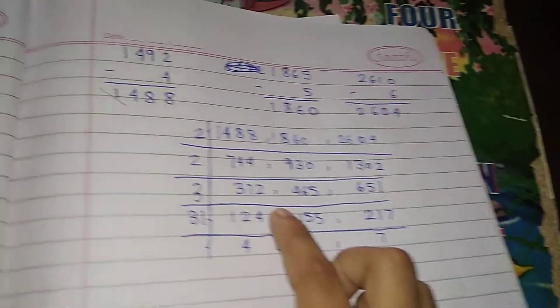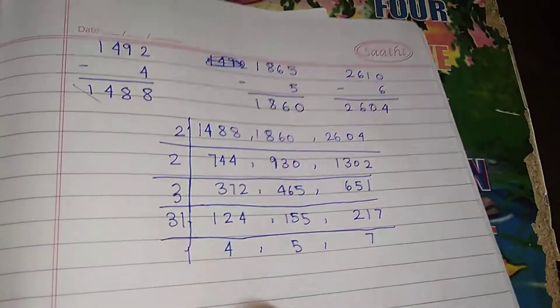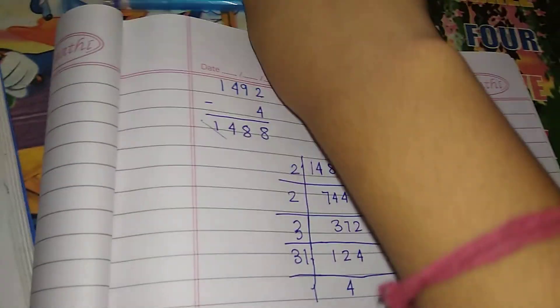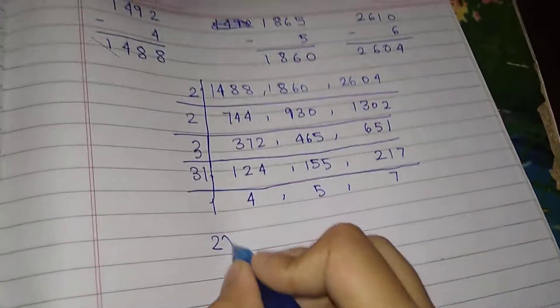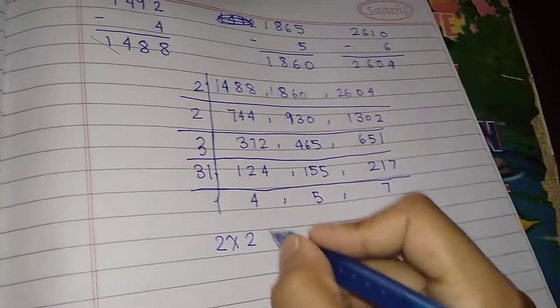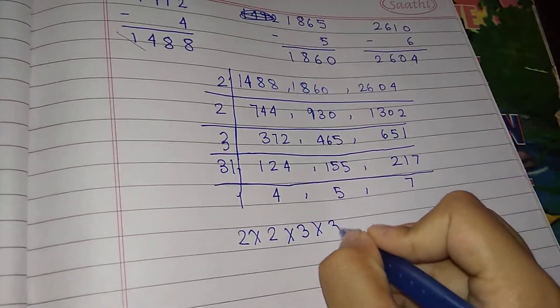So I did the HCF. So I have to write the answer that is 2 into 2 into 3 into 31.